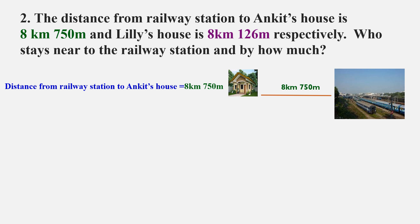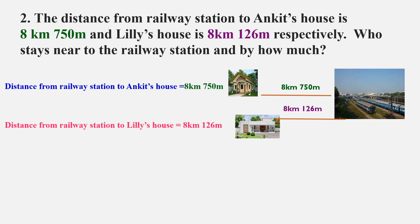Lily's house is 8 kilometers 126 meters from the railway station. The second step: distance from railway station to Lily's house is equal to 8 kilometers 126 meters. In order to find who is staying nearer to the railway station, we have to see which distance is less. It is of course Lily, because 8 kilometers 126 meters is less than 8 kilometers 750 meters.